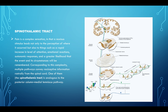Multiple pathways convey nociceptive information rostrally from the spinal cord. The spinothalamic tract is analogous to the PCML pathway. What's different is that when sensation is brought into the spinal cord, it travels up two to three segments and then decussates — a quick jump to the opposite side — then travels up through the VPL thalamus to the contralateral cortex. So instead of going ipsilaterally to the caudal medulla like the DCML, you get two to three segments up and then over. This pattern makes sense when assessing spinal cord lesions.